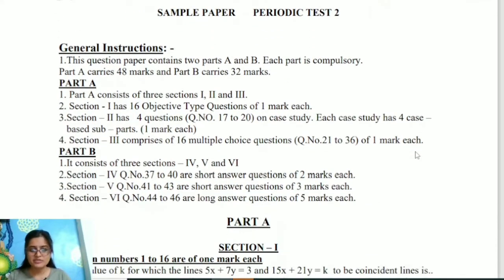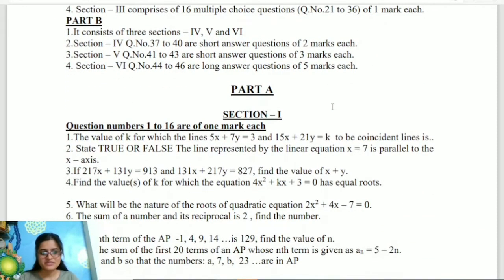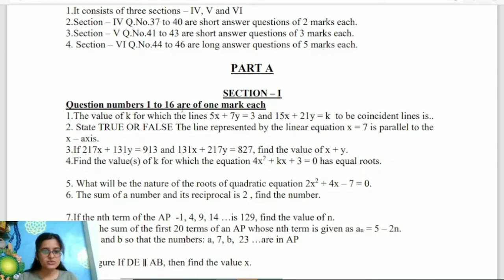Let's get started. We have two parts here. We will start with part A of the question paper. Section 1 carries questions 1 to 16 which are of 1 mark each. First question: you have to basically find the value of k and you have two lines. 5x plus 7y equals 3 and 15x plus 21y equals k. These lines are to be coincident lines. Basic question. Question number 2: True or false, the line represented by the linear equation x equals 7 is parallel to x-axis. Very basic. Question number 3: If 217x plus 131y equals 913 and 131x plus 217y equals 827, find the value of x plus y. You can easily solve it by substitution or elimination method.